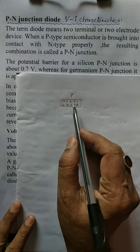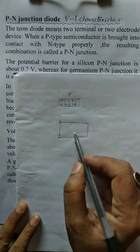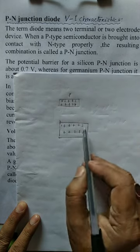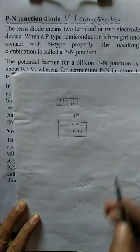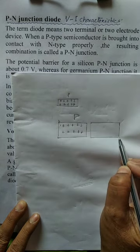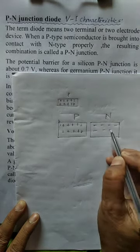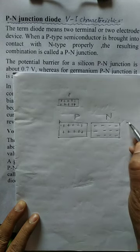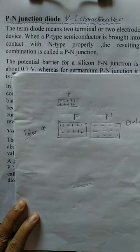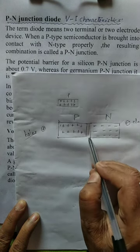I have written plus here to represent holes. For convenience, I am drawing a relatively larger picture. This is p-type semiconductor, and suppose we have another semiconductor, that is n-type. N-type carriers are negative charge — that is electrons. Minus represents electrons, and plus represents holes. When they are brought into contact...